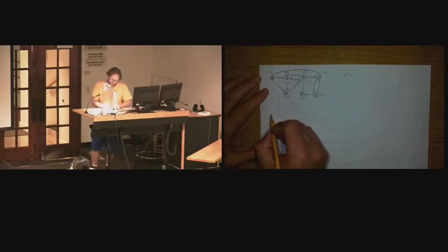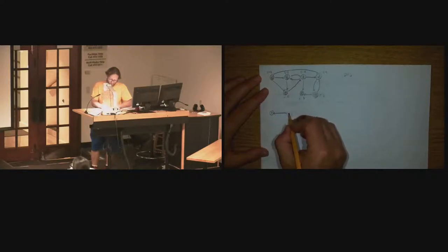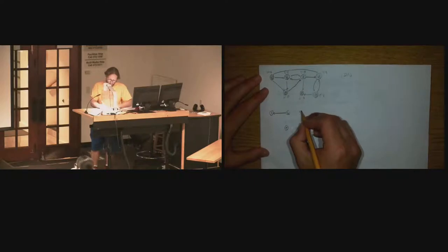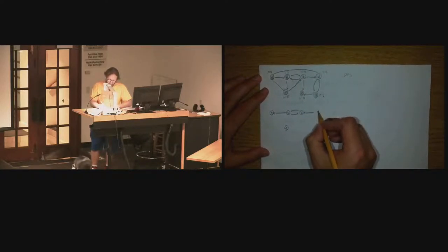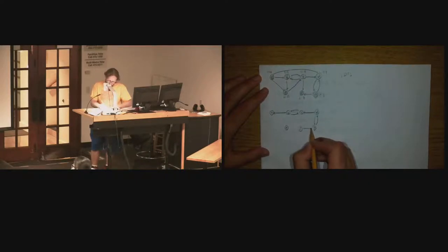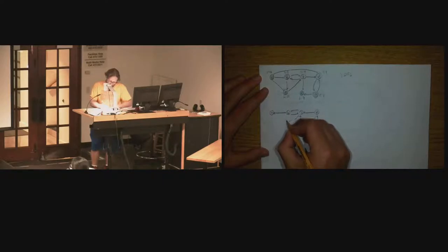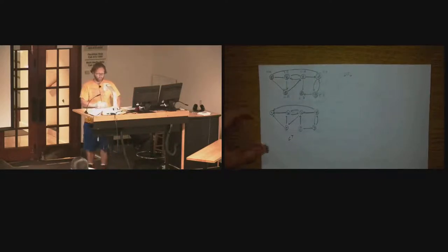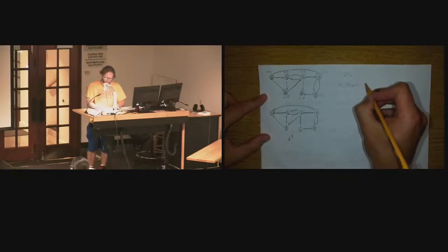Now let's draw the transpose — the reverse graph. A was connected to B in the original, so when we transpose, B is now connected to A. Both directions existed in some edges, so those stay. D gets reversed. F goes to G now instead. F goes to C. C goes to E. And both outgoing edges go back to A; we can go to A from D as well. This is the transpose graph — we compute it by taking the adjacency matrix and flipping it over.